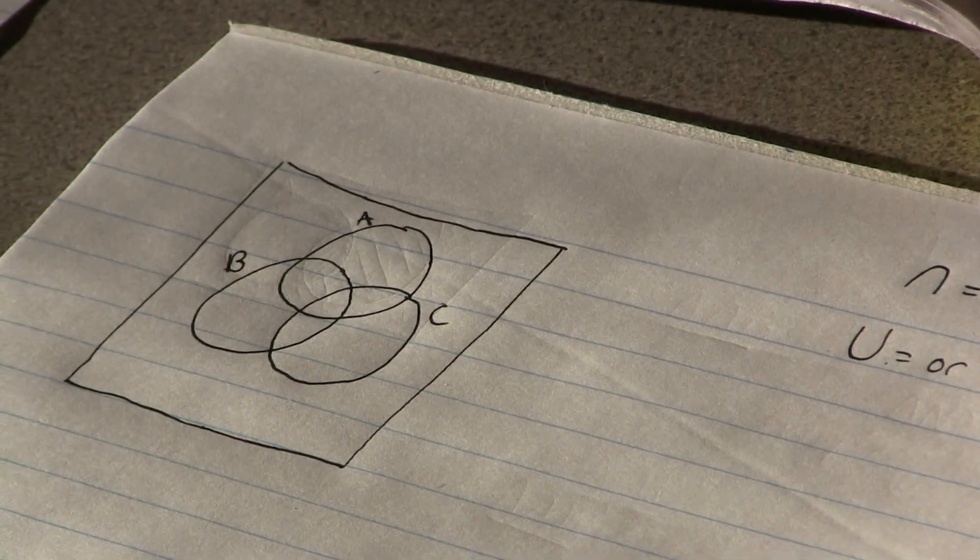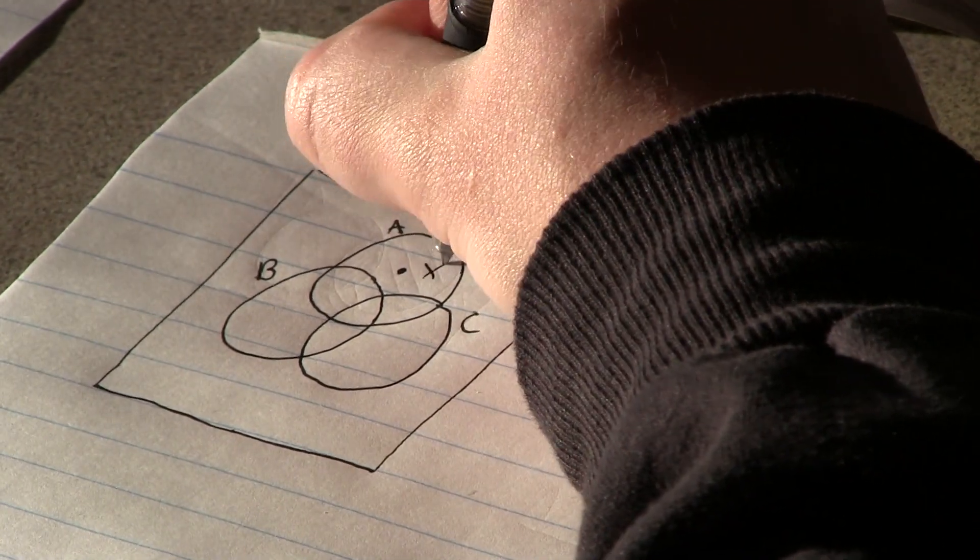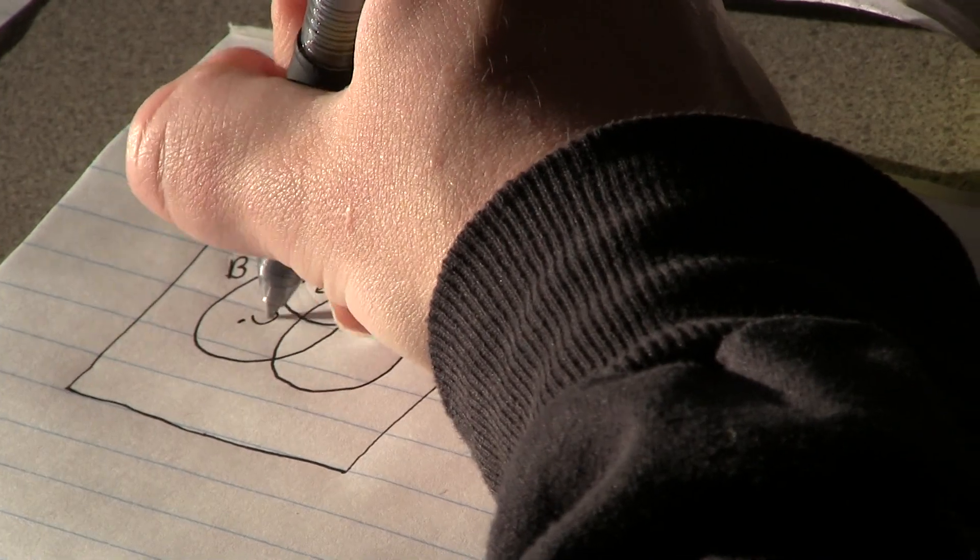Which of the following is a true statement about the Venn diagram shown in figure 1.8? Whoops, I forgot to label my points. They said I have an X, a Z, and a Y.